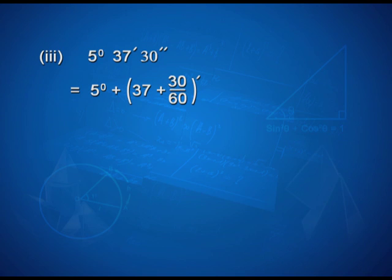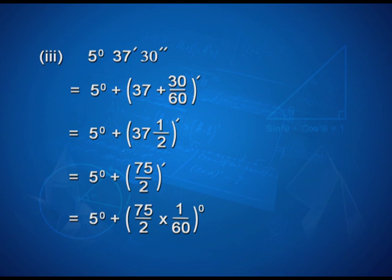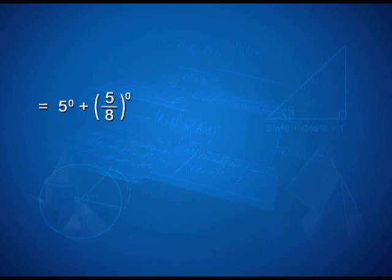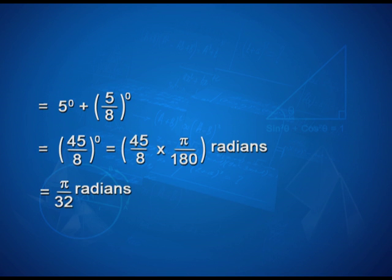Let us take one more example involving degrees, minutes, and seconds. 5° 37' 30" can be written as 5° + (37 + 30/60)' = 5° + (75/2 × 1/60)° = 5° + 5/8° = 45/8°. Converting to radians by multiplying by π/180, we get π/32 radians.